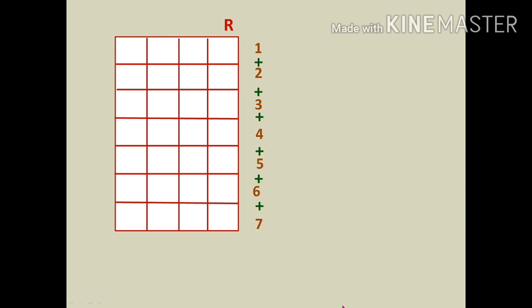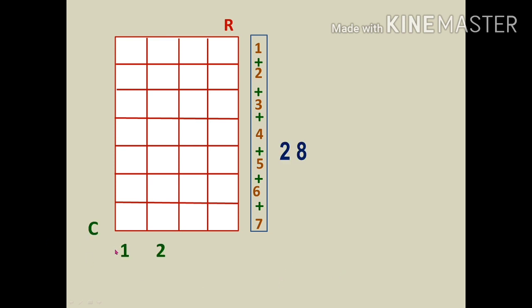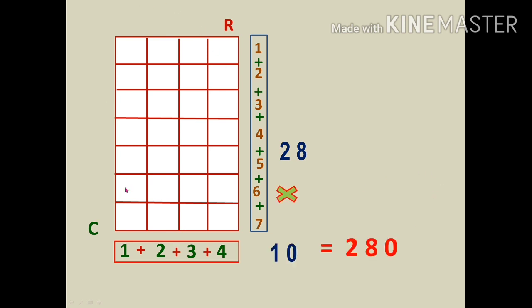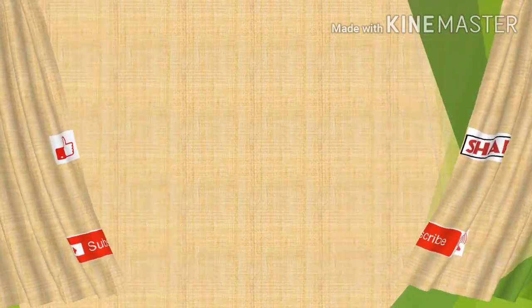Finally, one more image. Write the row series and add: the sum is 28. Write the column series and add: the sum is 10. Multiply 28 × 10 = 280. The total number of rectangles is 280. Always remember: in an image the number of rectangles will always be greater than the number of squares, since squares also fall under the category of rectangles. If you like this video, please press the like button, share with your friends, and subscribe to my channel. Thank you.